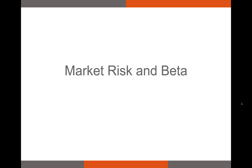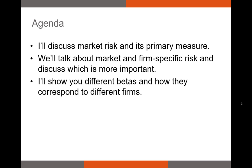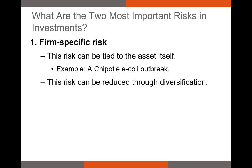Let's get to it. Beta is our best proxy for market risk. We can break risk into two broad types. The first is firm-specific or diversifiable risk — the risk tied to a specific asset, like a firm defaulting on its debt, the firm's CEO dying, or an E. coli outbreak. These are all firm-specific risks that primarily affect that firm's stock and maybe a couple of its suppliers or buyers. This is the risk we can reduce through diversification.